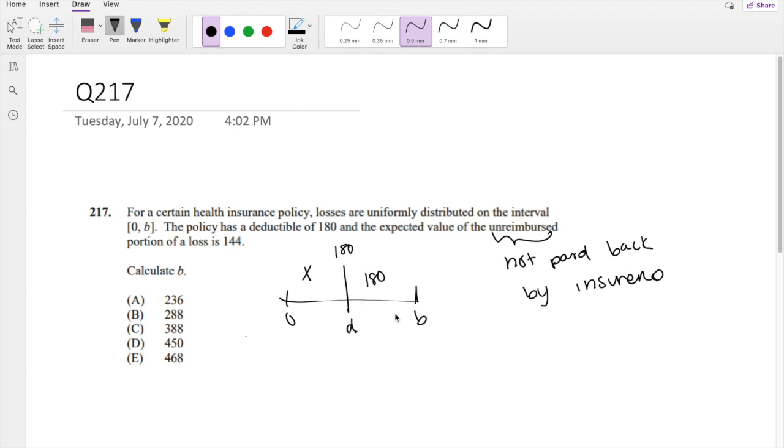So for example, let's say I had a loss that was 190, let's say like right here. Then the amount that's not paid back by insurance is still 180, right? That's the amount that I have to pay out of pocket. So no matter what your loss is after deductible, it's going to be 180. So knowing that,